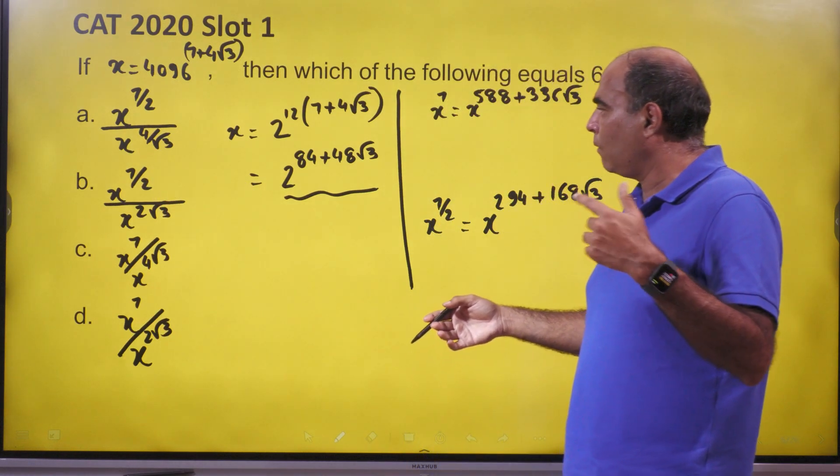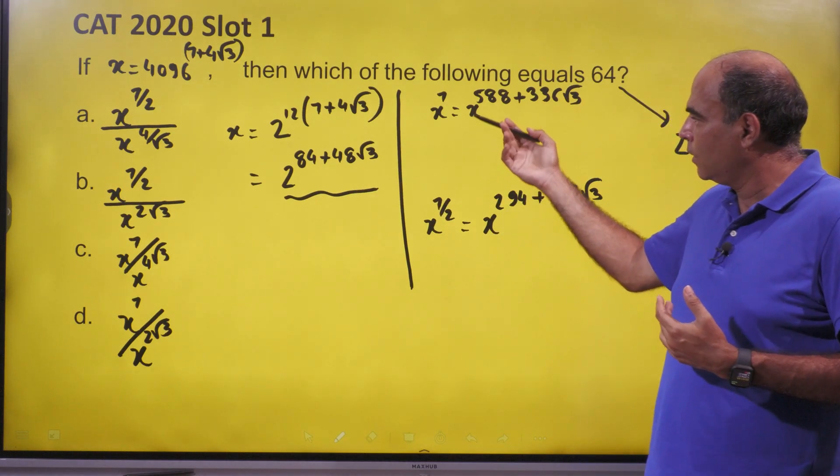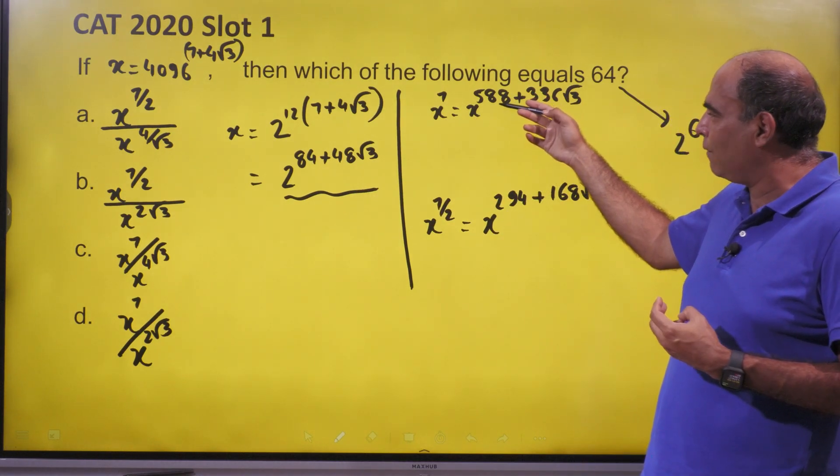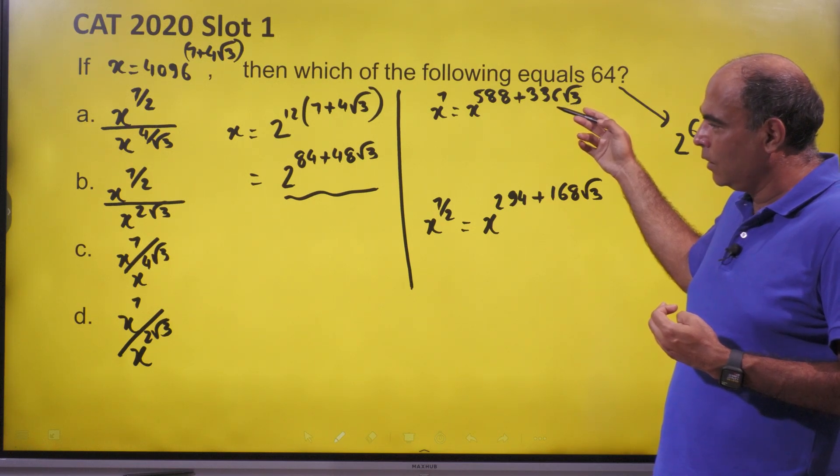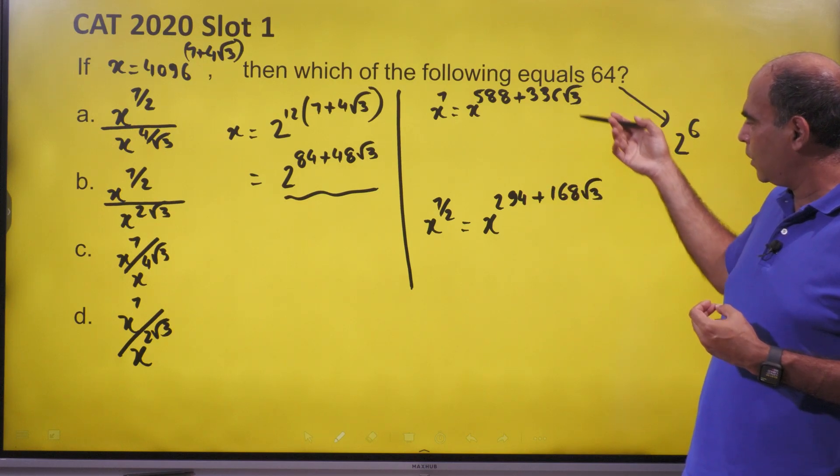The next thing you should do is evaluate that. If this is x, what will x raised to 7 look like? So x raised to 7 will be x raised to 588 plus 336 root 3, and x raised to 7/2 will be x raised to 294 plus 168 root 3.